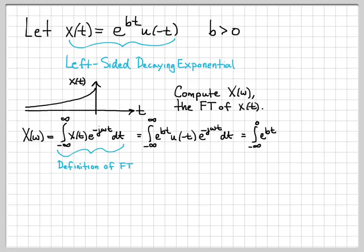Now in this next step, we simplify the integral limits. u of minus t is a step function that is on from minus infinity up to time 0. We can use that to change the limits of the integral. We've removed u of minus t but actually used it to change the limits. We only need to integrate from minus infinity to 0 because for all time greater than 0, u of minus t is off and the product of the integrand is 0.